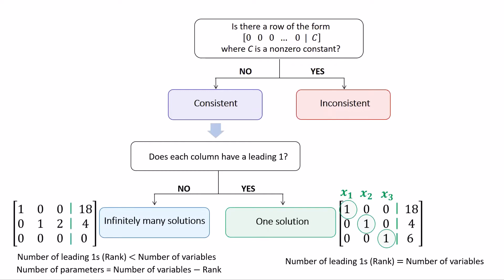In this example, there are two leading ones while there are three variables in the system. Therefore, the solution will be parametric, with x3 being the only free variable. Thanks for watching.